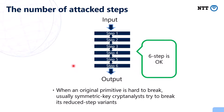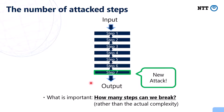So when an ordinary primitive is hard to break, symmetric cryptanalysis tries to break its reduced-step variants. This picture illustrates the case of a six-step variant — we try to find a valid collision attack on this six-step function. If we succeed, we then try seven steps, then eight-step, nine-step, and finally the original ten-step function. If the original ten-step function is broken, then we consider the hash function broken.